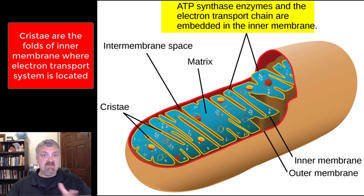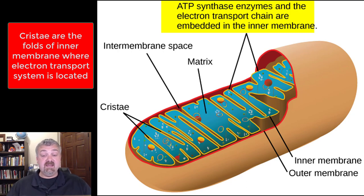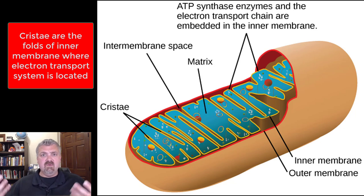The ATP synthase enzyme is the end of the line, the end of the electron transport system. All those enzymes are going to be there. The matrix has enzymes that are going to remove carbon dioxide and generate a little bit of energy as well.